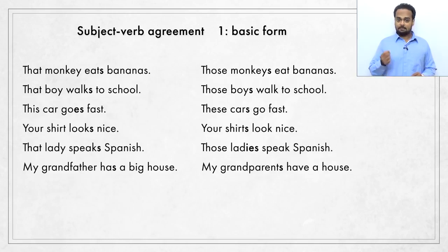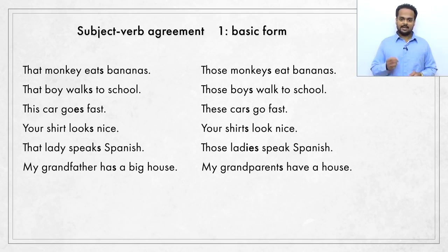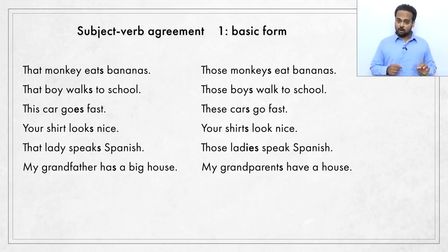Here are some more sentences: That boy walks to school. Those boys walk to school. This car goes fast. These cars go fast. Your shirt looks nice. Your shirts look nice. That lady speaks Spanish. Those ladies speak Spanish. My grandfather has a big house. My grandparents have a big house. The singular nouns — monkey, boy, car, shirt, lady, grandfather — all take singular verbs with an S: eats, walks, goes, looks, speaks, has. The plural nouns all have an S at the end, and the plural verbs have no S.